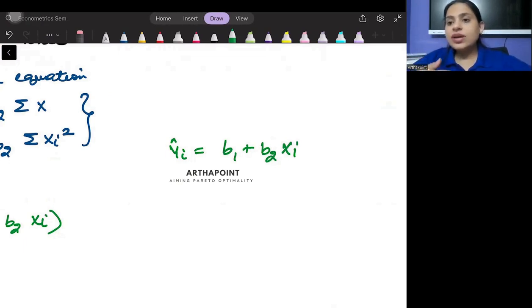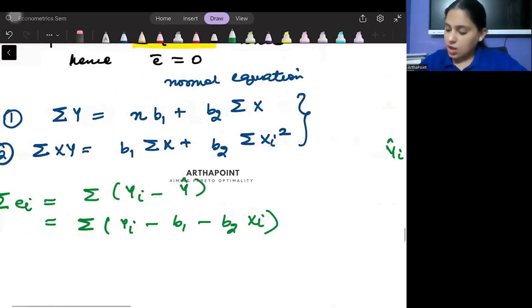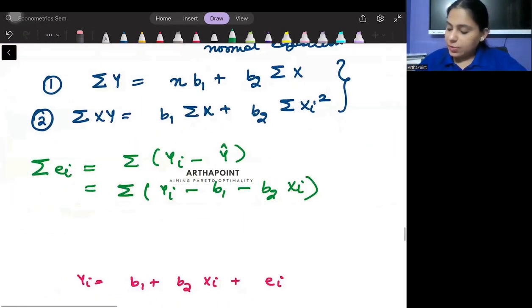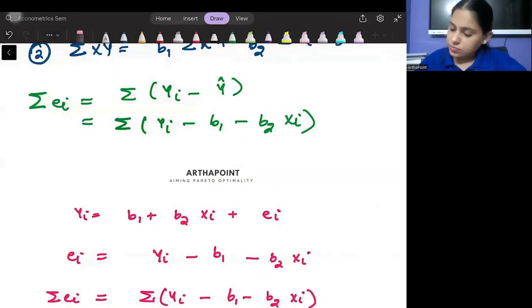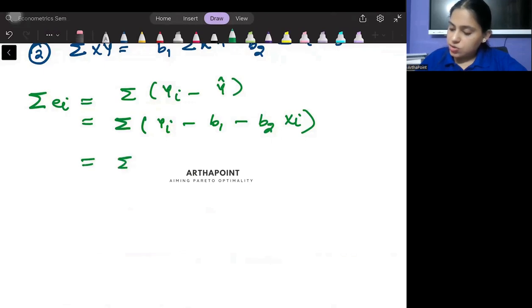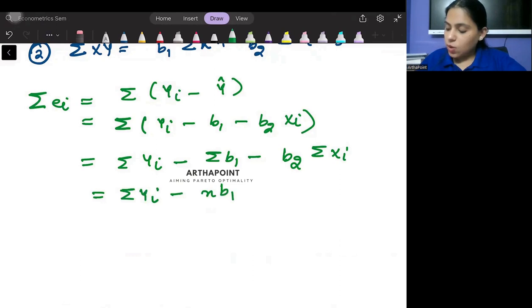Now if I were to go ahead and just open this up, I will get this as summation yi minus summation b1 minus b2 summation xi. This will be summation yi minus n b1 minus b2 summation xi.